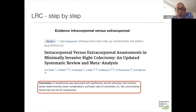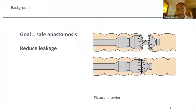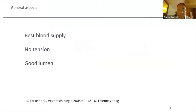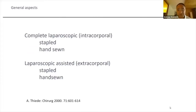Thank you. Welcome back. The goal of all of us is to make a safe anastomosis and reduce leakage, and therefore we need the best blood supply. It's now almost standard to use ICG, ensure no tension, and a good lumen. On the right side you usually have no tension, should have best blood supply, and good lumen depends on the surgeon's skills and technique.